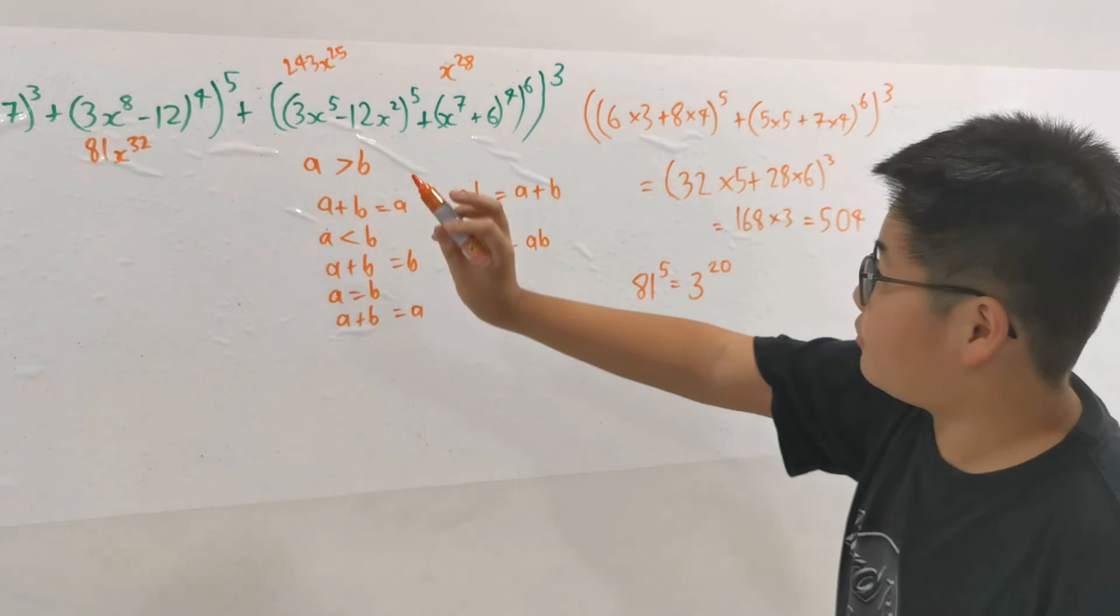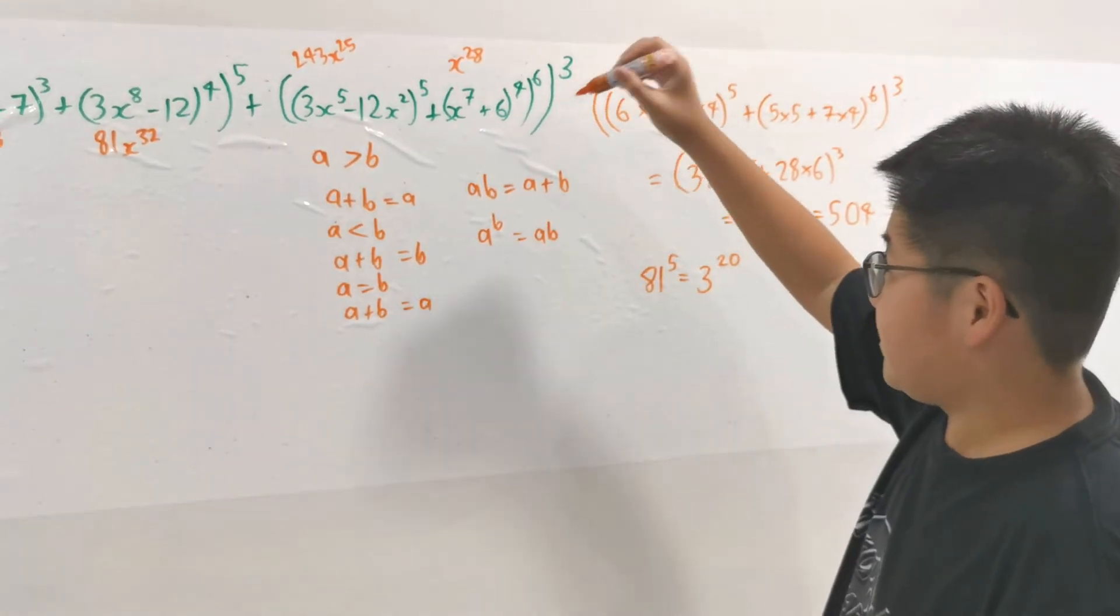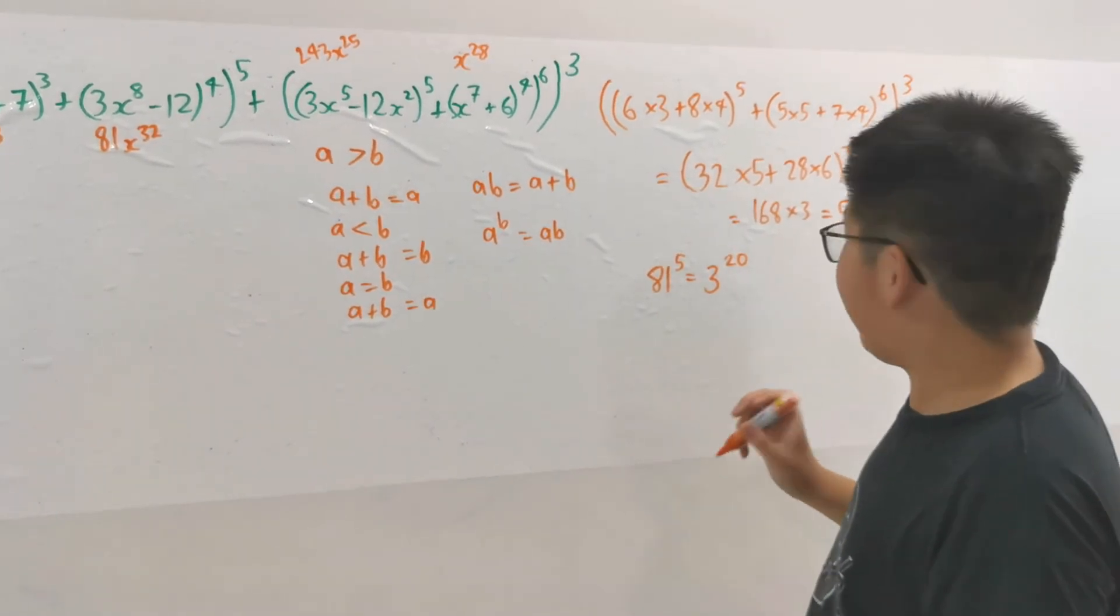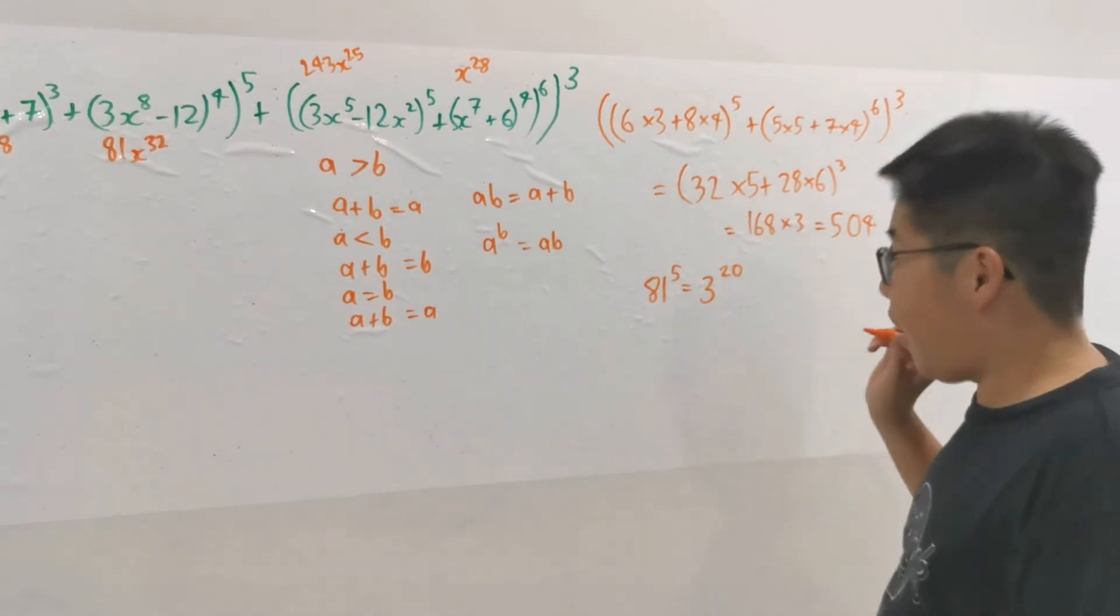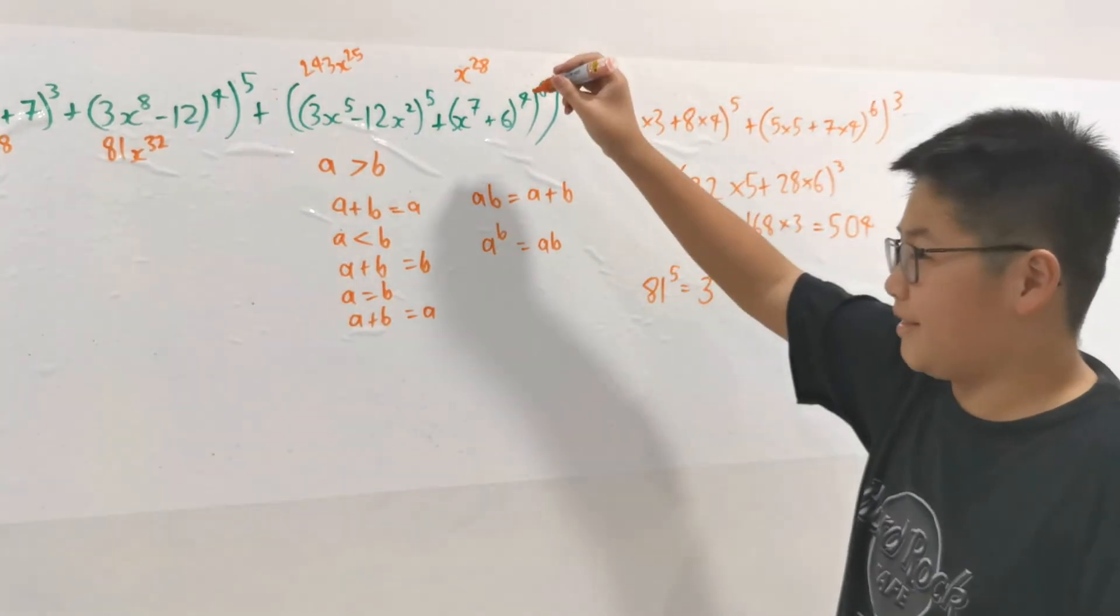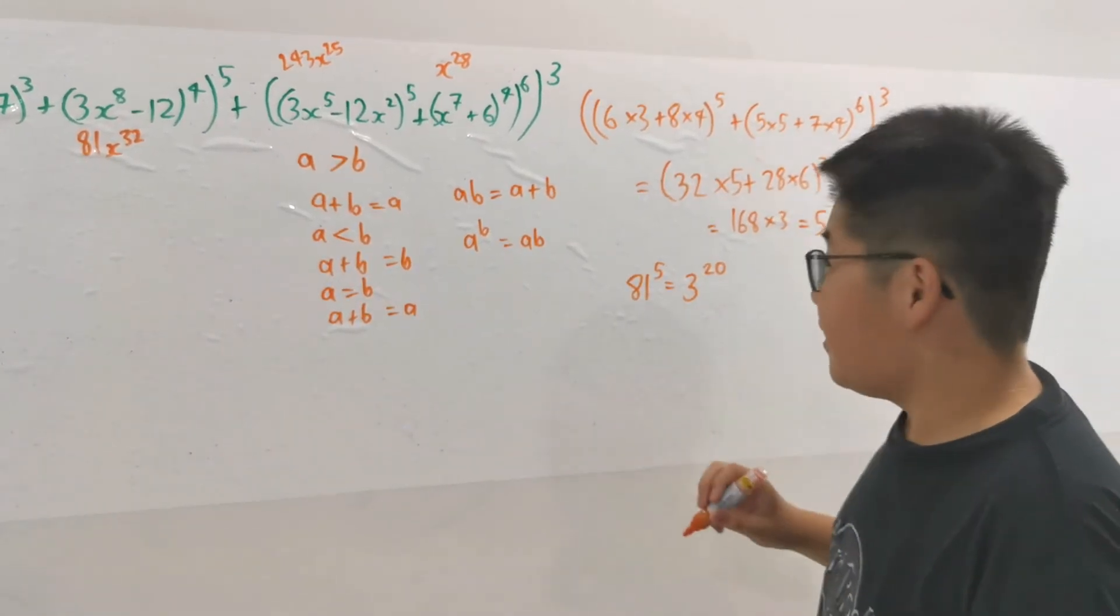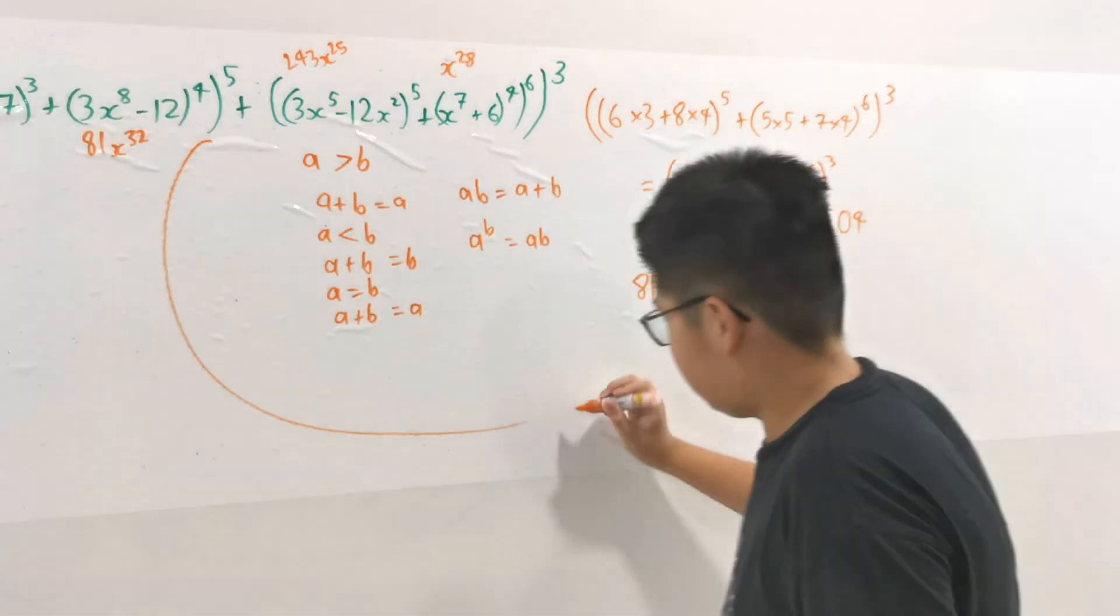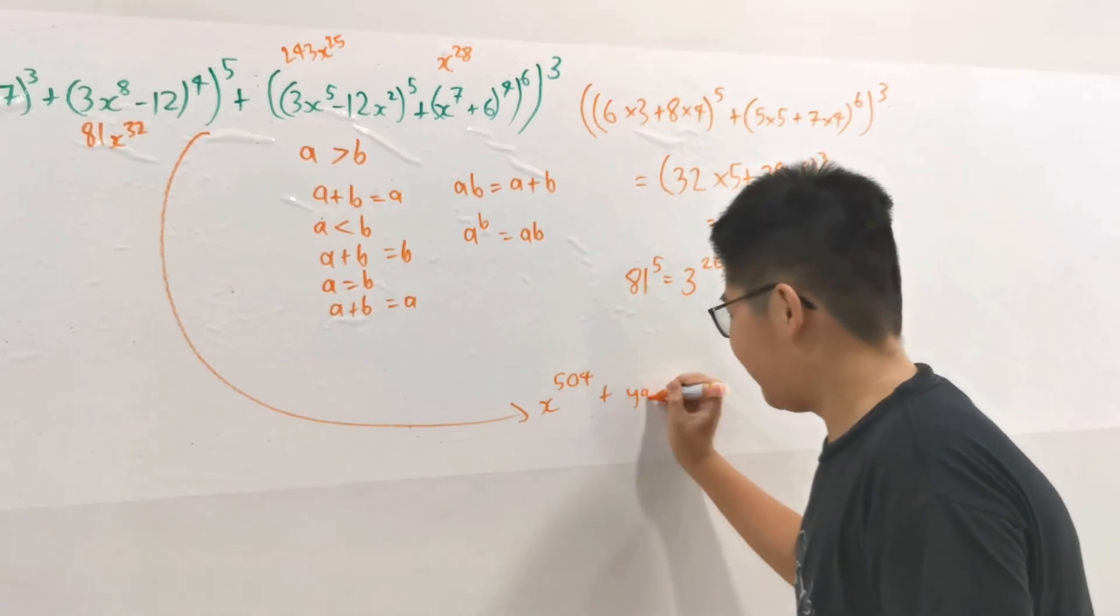So 81^5, we've seen it. Now x^28 to the power of 6... Since we've seen it's 168 times 3, and since the degree of this big term is greater than 3^20, we can safely say this gnarly polynomial equals x^504 plus lower order terms.